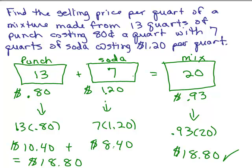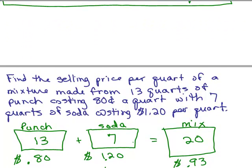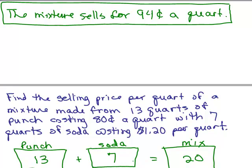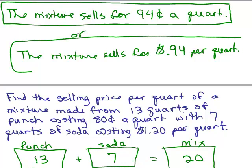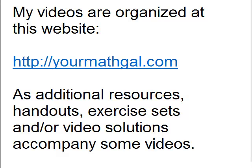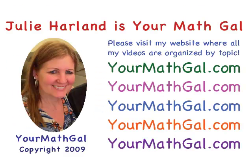So what we wrote for our answer up here is correct. The mixture sells for 94 cents a quart or you could do it in dollars and cents and write it like that. Perfectly okay either way because it means the same thing. Please visit my website at yourmathgal.com where you can view all of my videos which are organized by topic.